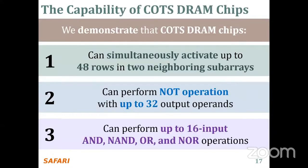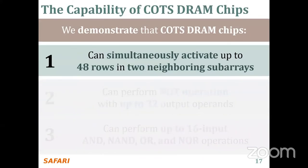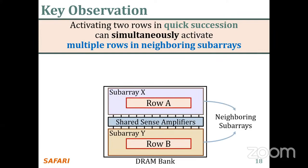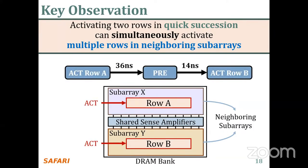Let's move on to our first analysis. We will demonstrate that off-the-shelf DRAM chips are capable of simultaneously activating up to 48 rows in neighboring subarrays. Our key observation is that activating two rows in quick succession can simultaneously activate multiple rows in neighboring subarrays. When we respect the timing parameters between each command — between ACT and PREA, and PREA and ACT — we activate a single row at a given time. However, when we violate these timing parameters, we activate multiple rows in neighboring subarrays.